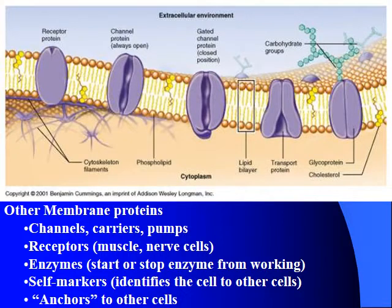There are proteins for just about any type of molecule that has to get into or out of the cell — channels, carriers, pumps. There are receptors for your nerve cells or muscle cells. There are enzymes that will actually start and stop other enzymes from working inside your cell when they get a message from outside. You get a message on the outside of the cell that sends a signal through the cell membrane and tells an enzyme inside to stop doing something. There are self-markers, which allow cells to identify themselves to other cells so your immune system doesn't attack them. Sometimes if cells feel there's nothing next to them, they'll start to grow — that's how we heal cuts. A lot of times proteins work as anchors to other cells, keeping them in the same basic position.